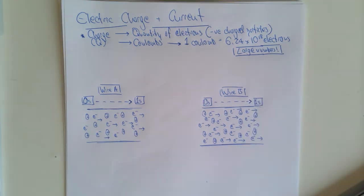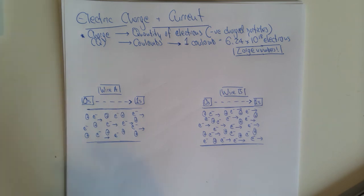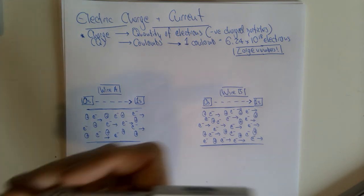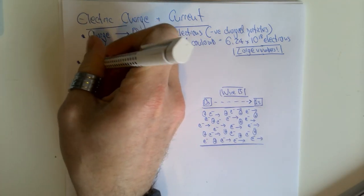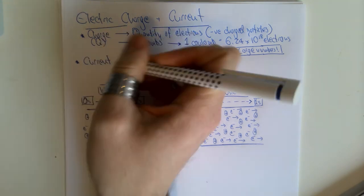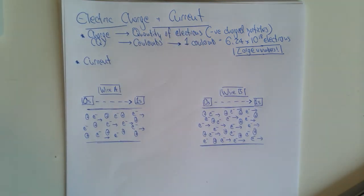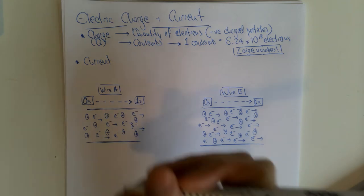We also need to understand the definition of current. Current can be described as the flow of electrical charge — specifically, the flow of charge per second.